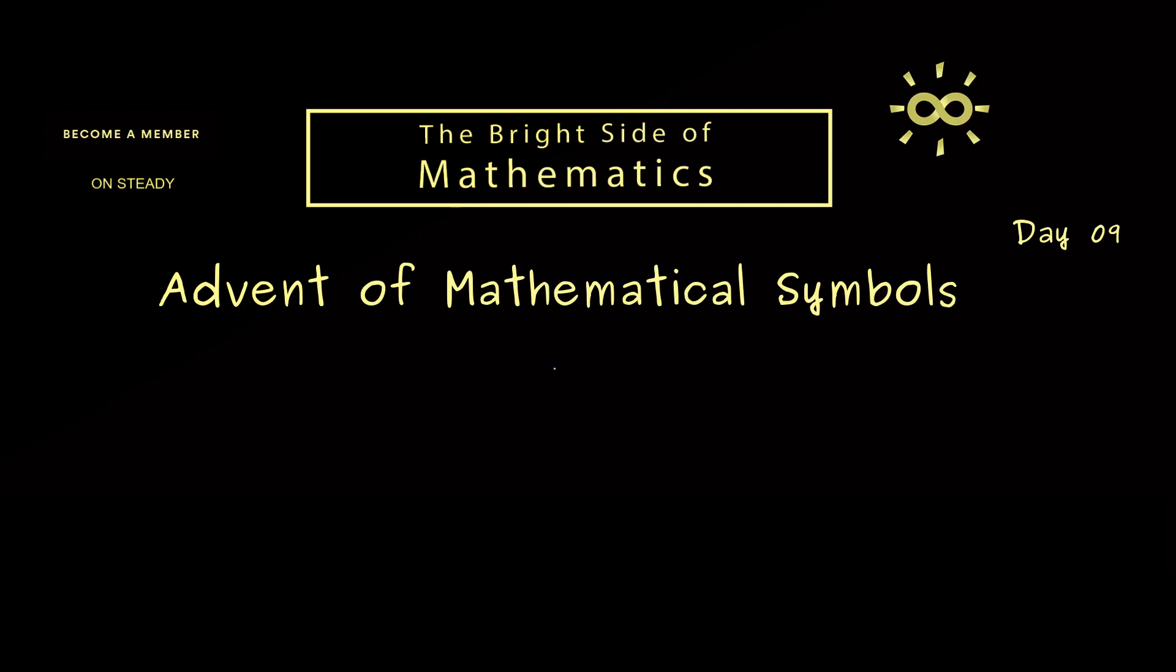The mathematical symbol of today is the restriction for maps, denoted with such a vertical line. And usually on the left-hand side you find a map f, and at the index you find a set A.